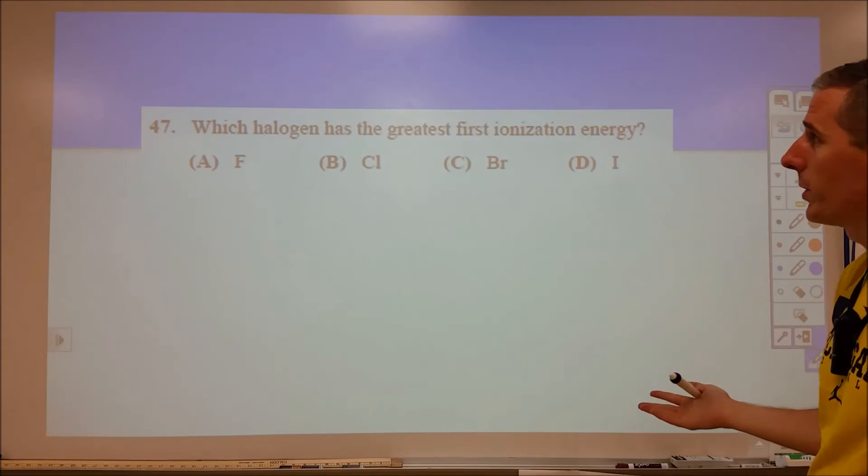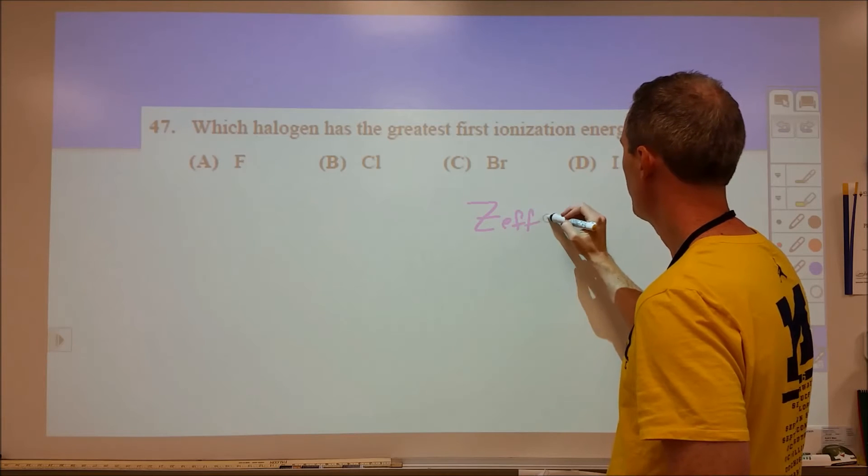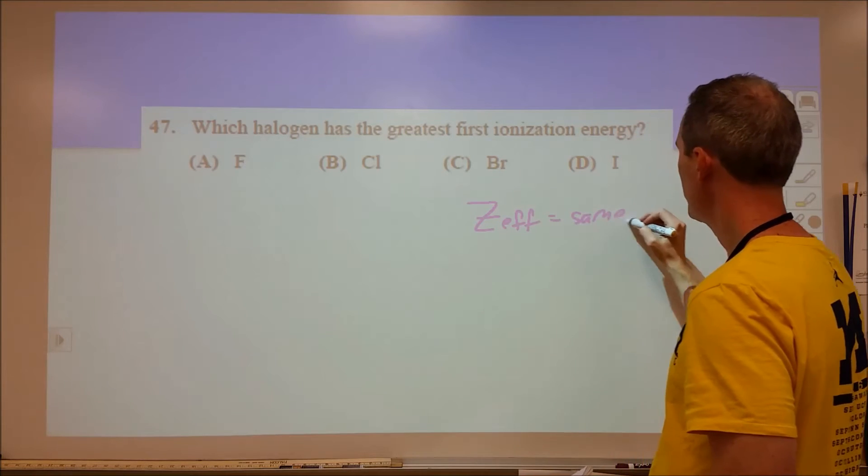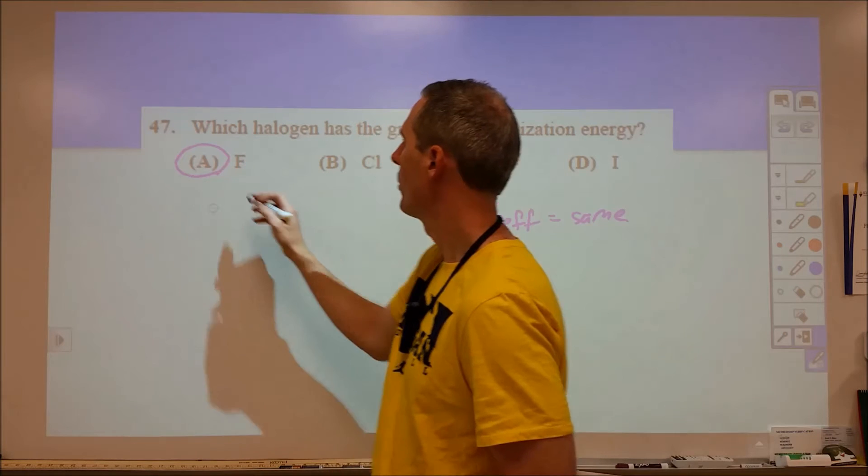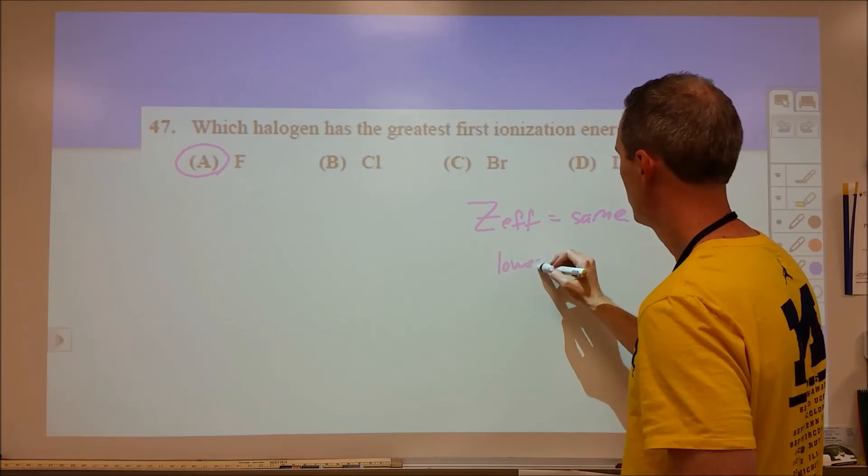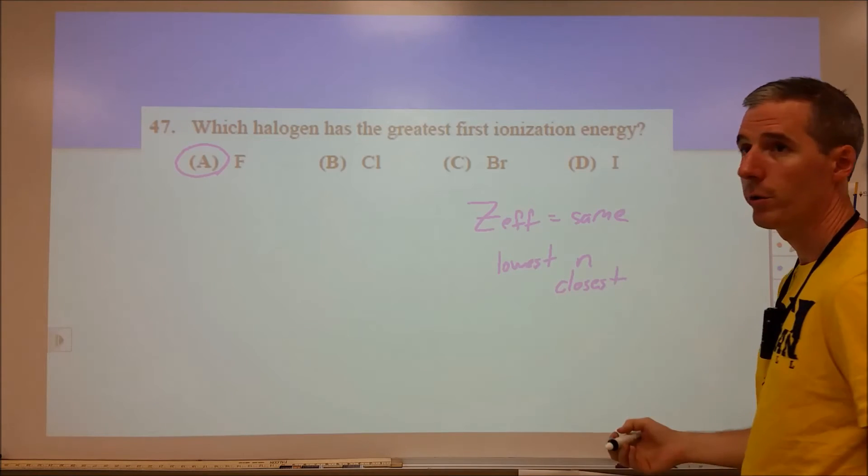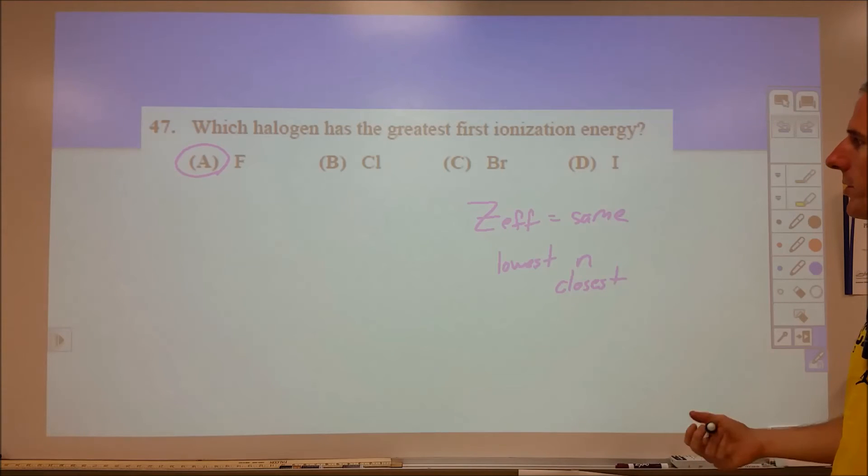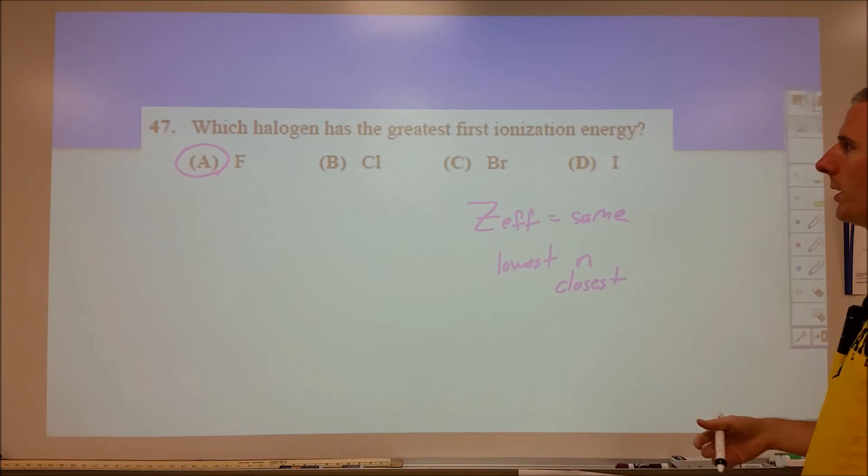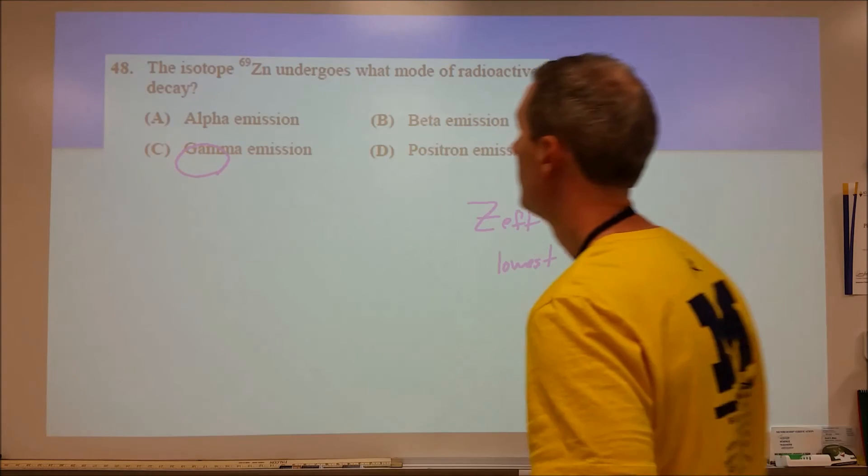This one, on the other hand, is pretty simple. Which halogen has the greatest first ionization energy? The effective nuclear charge for all intents and purposes is the same for each of these. Therefore, the fact that fluorine has its valence electrons in the lowest energy level means they are closest to the nucleus. If they're all pulling with about the same net amount, the ones that are closest together should win. That would be fluorine and it does have the highest first ionization energy.